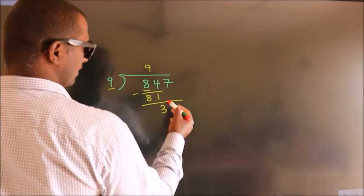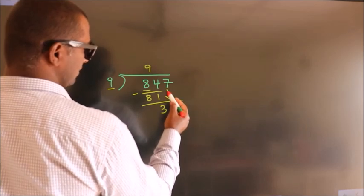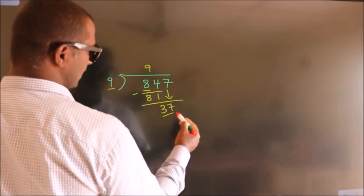After this, bring down the next number. So 7 down, we have 37.